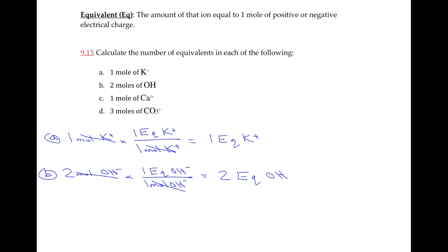I'm going to skip ahead to D, which is a little more involved. If I have three moles of carbonate CO3²⁻, in one mole of carbonate CO3²⁻, how many equivalents would I have? The charge is minus two, so that means I have two equivalents. My moles of carbonate will cancel out, and I have three times two, which gives me six, a total of six equivalents of carbonate.